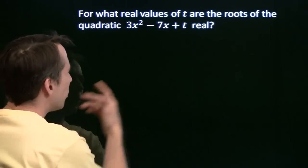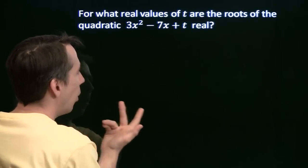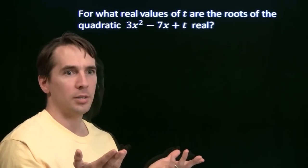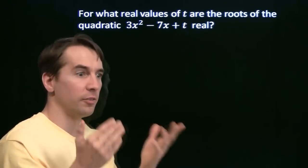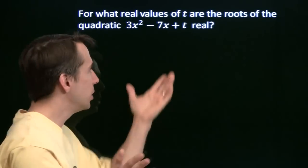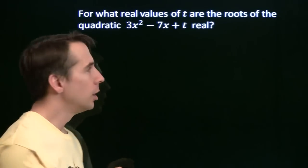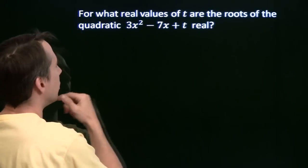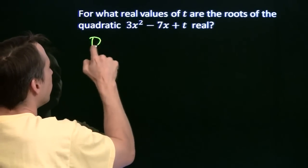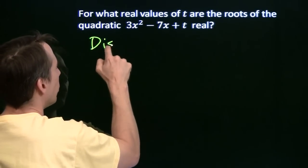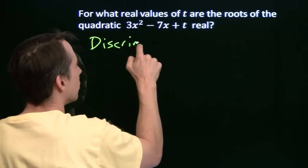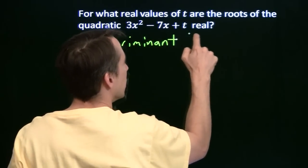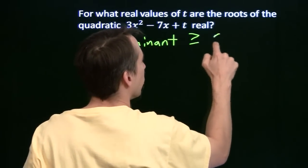We want the roots to be real. Well, all that means is that the discriminant is non-negative. If the discriminant is negative, then the roots will come out to be non-real. But if the discriminant is 0 or positive, then we know that the roots will be real. So we want the discriminant to be greater than or equal to 0.